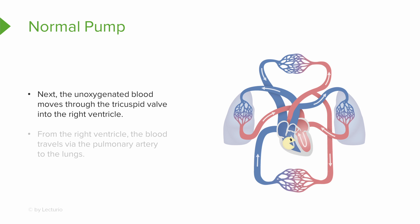From the right ventricle, the blood travels through the pulmonary artery into both the right and left lungs. It's called the pulmonary artery because it's taking blood away from the heart — that's why its name is artery. So: right atrium, through the tricuspid valve, right ventricle, then out to both lungs to get oxygenated.